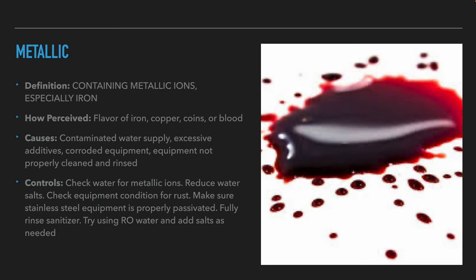The next flavor is metallic. We perceive it as water that contains metal ions, especially iron. It can also have the taste of iron, copper, coins, or blood. The causes of the appearance of this flavor are contact with metal, too much yeast nutrients, rusty equipment, unclean equipment, and other factors that can add metals to the beer. To avoid it, make sure that the water does not contain metal ions, reduce the amount of yeast nutrients, check that the equipment is not rusted and properly passivated, and wash any disinfectant if necessary according to the manufacturer's instructions.